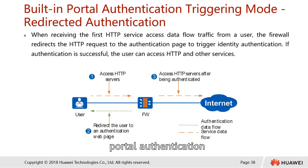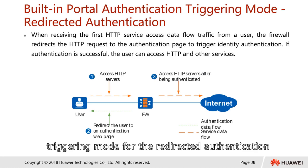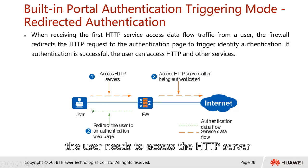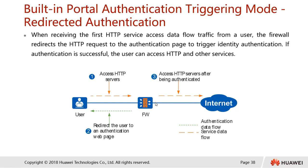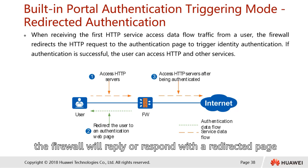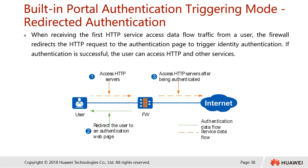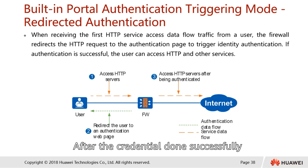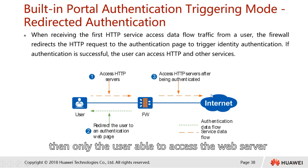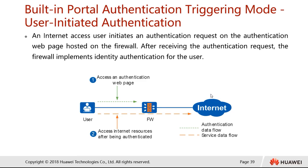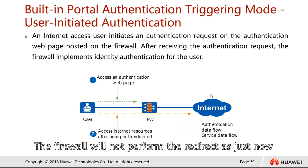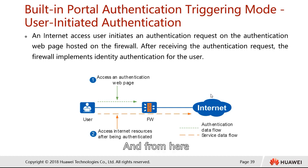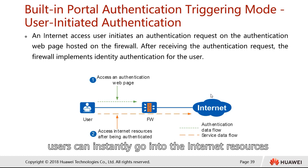For the redirect authentication triggering mode, the user accesses the HTTP server and passes through the firewall. The firewall replies with a redirect page, and the user must authenticate using their credentials. After successful authentication, the user can access the web server. For user-initiated authentication, the user directly accesses the authentication page. The firewall does not perform a redirect — once authenticated by the firewall, the user can instantly access internet resources.